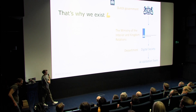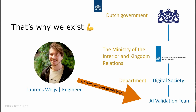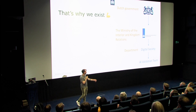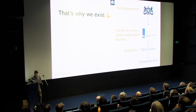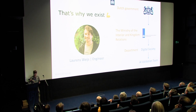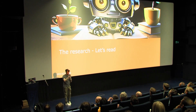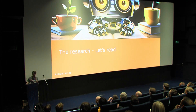So that's why we exist — the AI Validation Team. As you can see, there is a very hierarchical tree on the right showing where I'm working: the Dutch government, the Ministry of Interior, Department of Digital Society, and then the AI Validation Team, that's what we call ourselves. And that's me. There used to be an arrow indicating I'm actually part of the team, but I seem to be very bad at using Keynote animations.